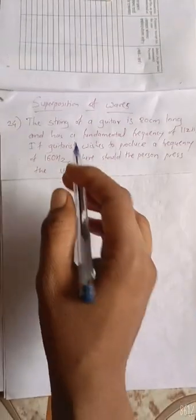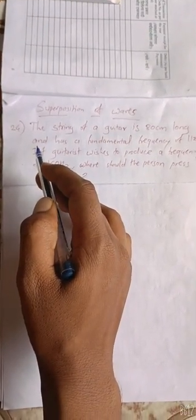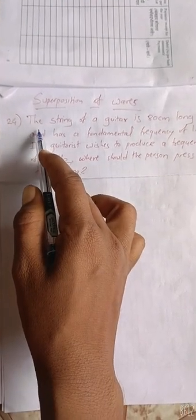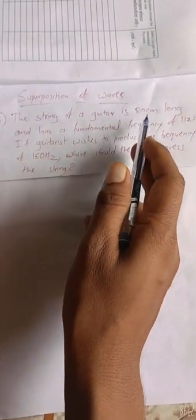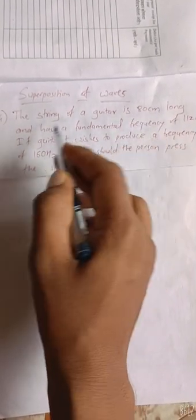Hi students, this chapter is superposition of waves, page number 157, question number 24. The problem is: the string of a guitar is 80 centimeter long and has a fundamental frequency of 112 hertz.